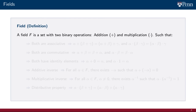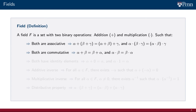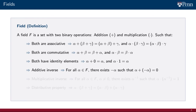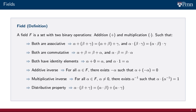If we want to be formal about it, a field is defined as a set on which two binary operations are defined: addition and multiplication. These operations must satisfy certain properties. They must be associative and commutative, and they both must have identity elements — a 0 for the sum and a 1 for the multiplication. The sum must have an inverse for all elements, and the multiplication must have an inverse for all elements except the identity element of the sum.